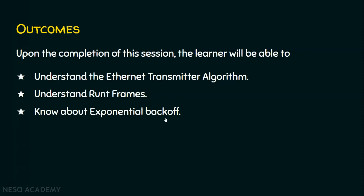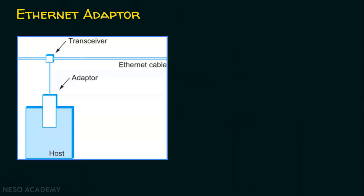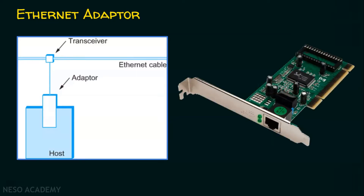Before we step into the Ethernet transmitter algorithm, we will see the Ethernet adapter. If we have a host computer, it will have an adapter where the Ethernet cable is connected. This is the Ethernet adapter, also called the NIC card — the Network Interface Card. This NIC card is part of the host computer, so we can plug our Ethernet cable into this port using an RJ45 socket.